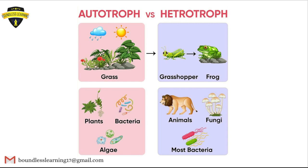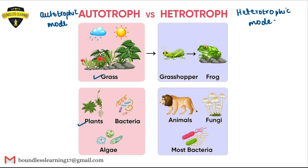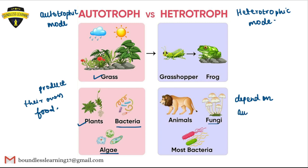This slide shows the difference between autotrophs and heterotrophs. Autotrophs are organisms that show autotrophic mode of nutrition — examples include grasses, plants, some autotrophic bacteria, and algae, all of which produce their own food. Heterotrophs are organisms that show heterotrophic mode of nutrition — examples include grasshoppers, frogs, the majority of animals, fungi, and most bacteria, because they depend on autotrophs for food.